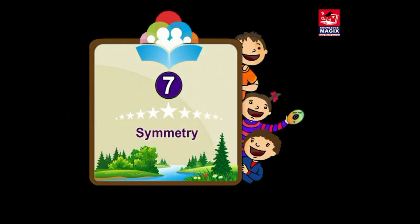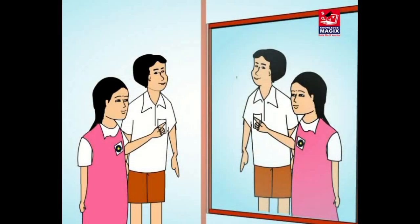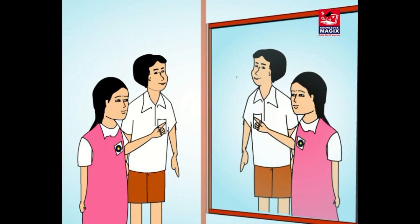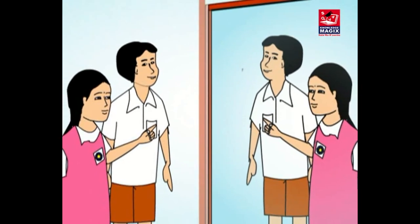Chapter 7: Symmetry. A girl and a boy are watching their images in the mirror. What is the difference between the mirror image and the actual one? The badge on the left appears on the right in the image. The image of the boy in the mirror is as far behind the mirror as he is standing in front of it. So we can say that the boy, the girl, and their images are symmetrical with reference to the mirror.